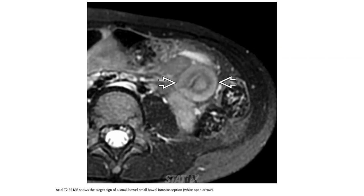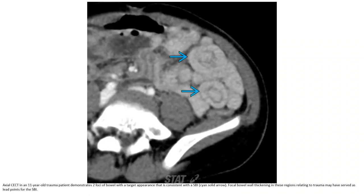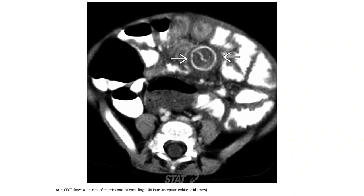CT in an 11-year-old trauma patient demonstrates two foci of small bowel intussusception with a target appearance. There is bowel wall thickening in this region related to trauma, which may have served as a lead point for the small bowel intussusception. Note the crescent of mesenteric contrast and cycling appearance of the small bowel intussusception.